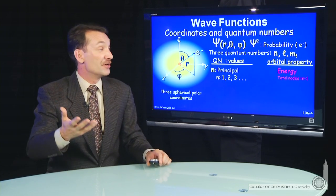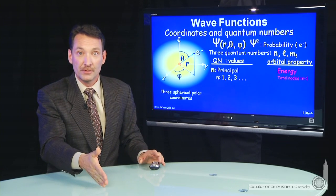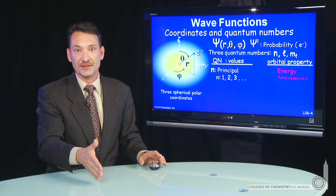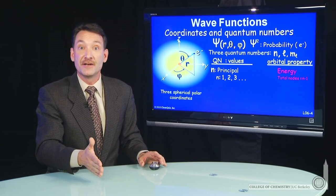Now, remember node, that's an area where the wave function goes to zero. The square of the wave function is zero. So it's a region of space where there's no probability of finding an electron.